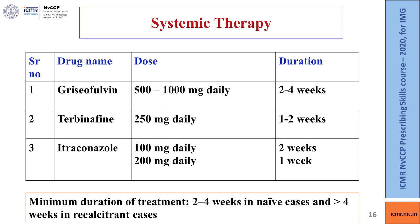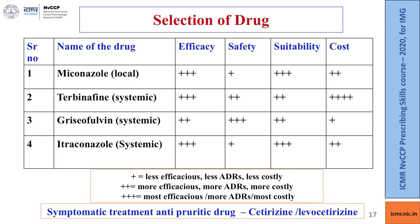For systemic therapy, three options are: tablet griseofulvin 500–1000 mg daily for 2–4 weeks; tablet terbinafine 250 mg daily for 1–2 weeks; tablet itraconazole 100 mg daily for 2 weeks or 200 mg daily for 1 week. Minimum treatment duration should be 2–4 weeks in drug-naive cases and more than 4 weeks in recalcitrant cases. Applying the STEPS criteria — selectivity, tolerability, efficacy, and price — miconazole, terbinafine, and itraconazole are equi-efficacious.